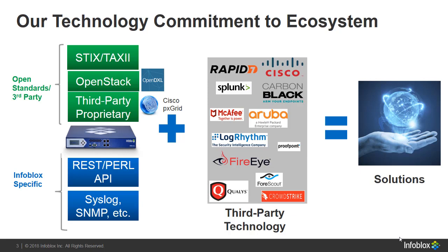McAfee's Data Exchange Layer, also called DXL, is a communication fabric that connects and optimizes security actions across multiple vendor products. It is to be noted that with regards to STIX/TAXII, NIOS is only a client that has been tested with Threat Connect, and with respect to DXL, NIOS sends messages. RESTful API can be used to obtain core network service information from the Infoblox grid to assist with profiling the source or destination of network devices, or use the RESTful API to change configurations in the Infoblox grid to help mitigate security threats.